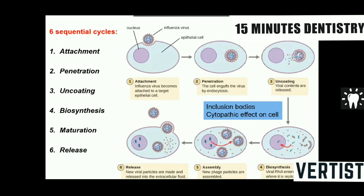When a virus infects a cell, the mechanism is as follows: it attaches to the cell surface, gets entry into the cell, and there is an uncoating of the viral particles. The viral genome then integrates with the host nucleus, which starts replicating the viral DNA. This viral DNA persists in the cell in the form of inclusion bodies.